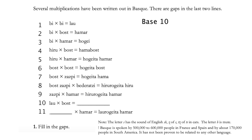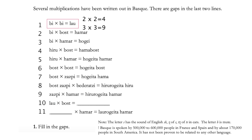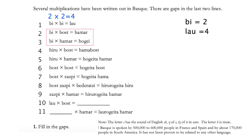We can certainly tell that 'bi' and 'lau' are both single-digit numbers, assuming base 10. So there are only two possibilities: 2 times 2 equals 4, or 3 times 3 equals 9. I will start with 2 times 2 equals 4, because if 'lau' equals 9 then in equation 10 the resultant number will be massive. Therefore, if 'bi' is 2 then 'lau' is 4. Now we can try out 'hogei' as either 10, 20, or 30.